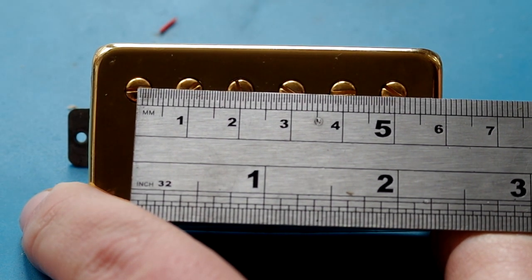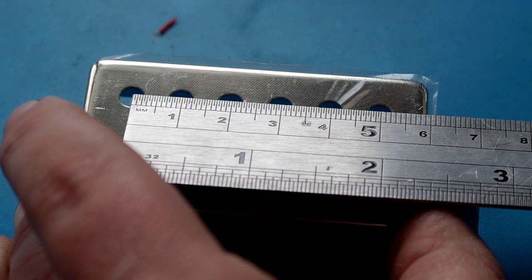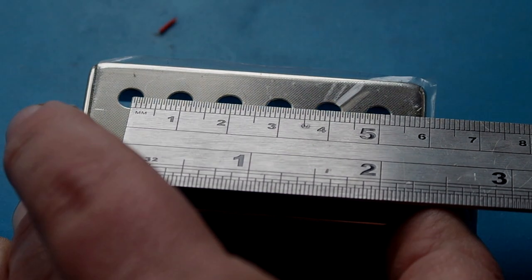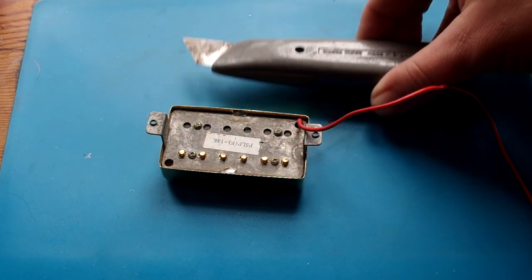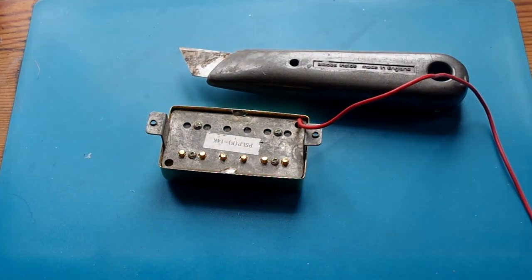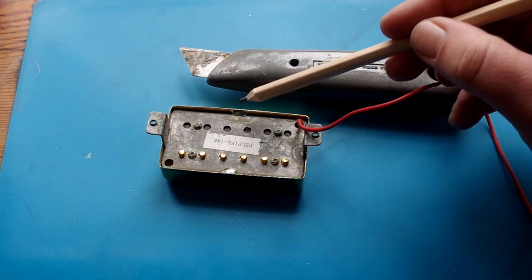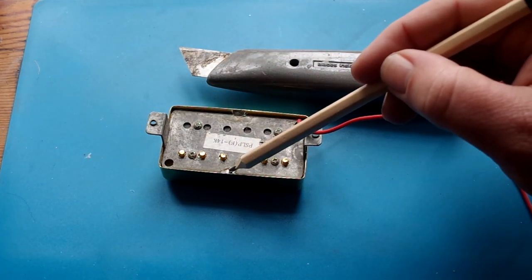You can see here it's 50 millimeters, so 5 centimeters, and I'm going to check that with the new cover. That'll make sure that these will actually line up. When you're ordering your new cover just make sure you get the correct spacing, as there is a little bit of difference between 50 and 52. Some things are 49.1 etc.